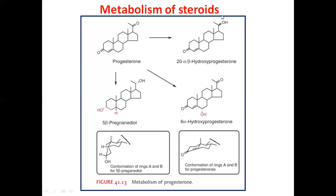The same progesterone is also converted to 20α- or 20β-hydroxyprogesterone, where the 20th carbon — counting 17, 18, 19, 20 — gains a hydroxyl group. For easy understanding, the cis-decalin (cis form) and trans form of the steroid ring are also indicated.